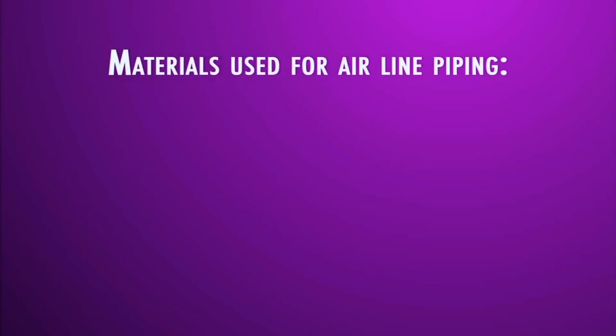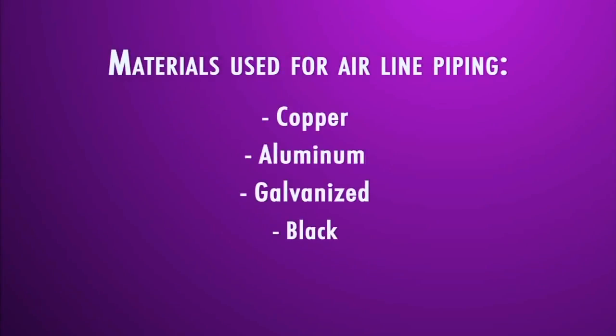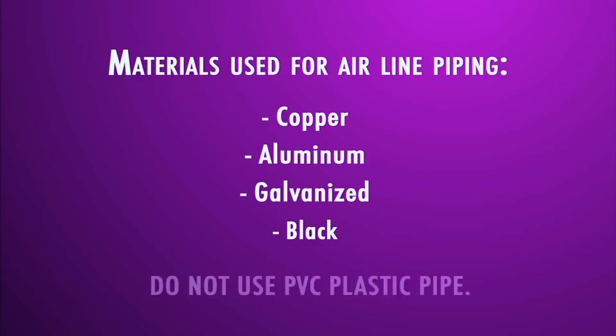Materials commonly used for airline piping are copper, aluminum, galvanized, and black pipe. Never ever use PVC or plastic pipe.